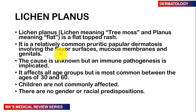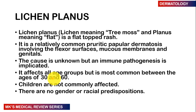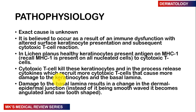The actual cause of the condition is unknown, but what we believe is that there is an immune pathogenesis that has been implicated. All age groups are affected, though children are not commonly affected. Individuals between the ages of 30 and 60 are most commonly affected by the disease, and there is no gender or racial predilection to the condition.